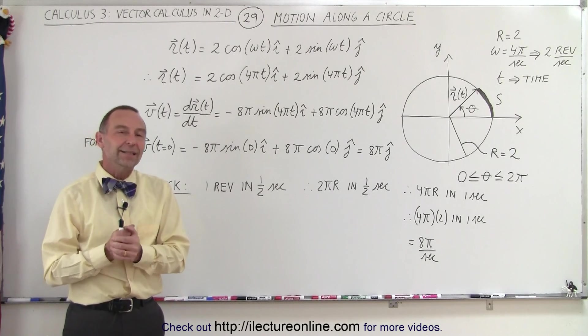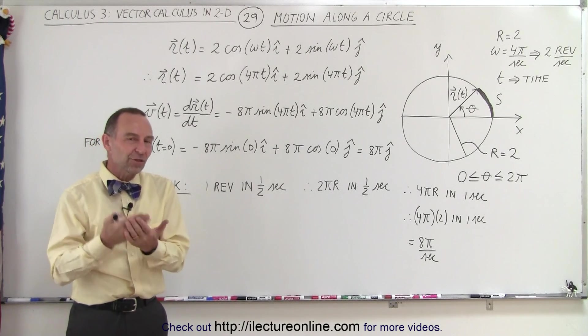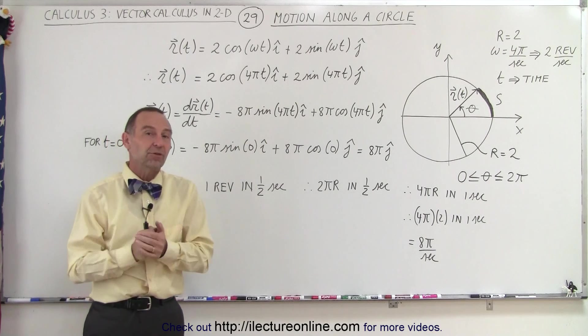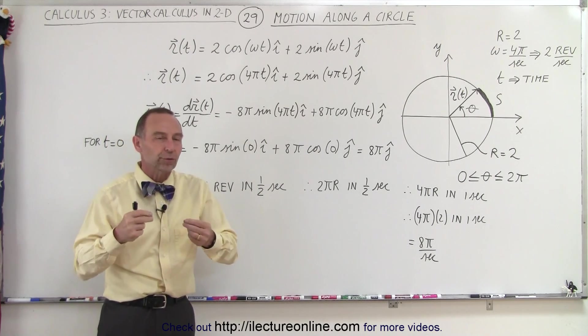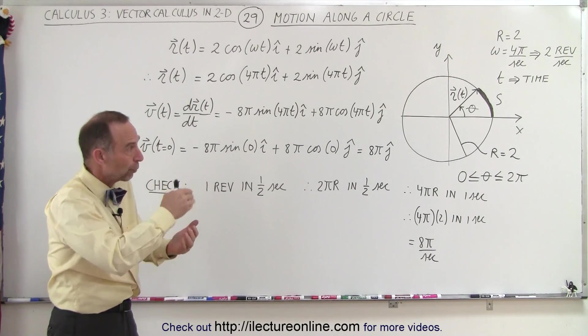Welcome to Electron Line. Here we're going to use the position vector and the derivative of position vector to describe motion. In this case we're going to do motion around the circle.